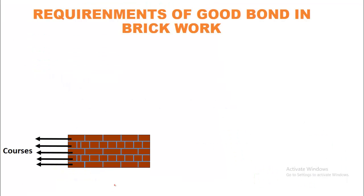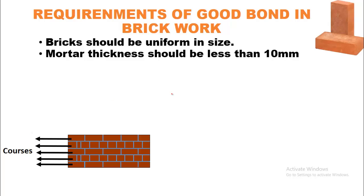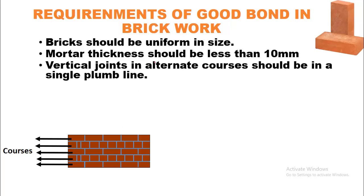Requirements of a good bond in brickwork: bricks should be of uniform size. Mortar thickness should be less than 10 mm. Vertical joints in alternate courses should be in a single plumb line — meaning the wall should be perfectly vertical and straight.